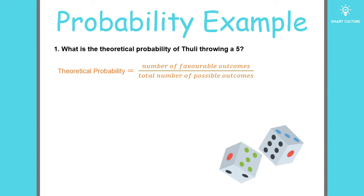The total number of possible outcomes is 6 because Tudu can possibly throw 1, 2, 3, 4, 5, or 6. So it will be 1 over 6.